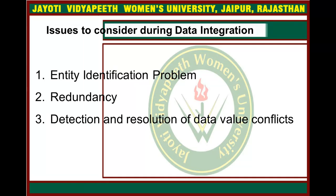First, the entity identification problem. In this problem, combining a schema and matching an object can be tricky. For example, how can a data analyst or a computer be sure that the client ID in one database and the cost number in another refers to the same attribute? Metadata can be used to help avoid schema integration errors and to help transform the data.